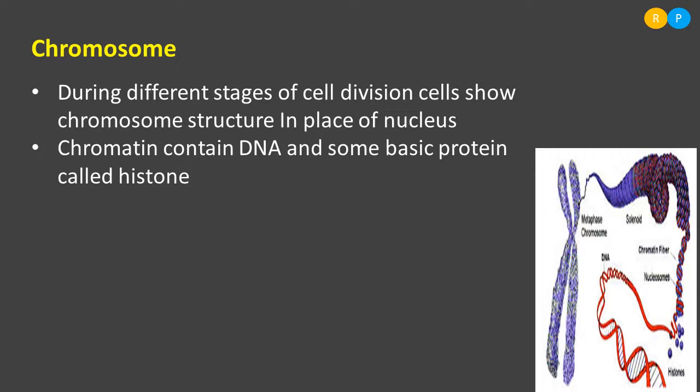Which structure is actually forming the chromosome? In the nucleoplasm, small circular structures are present named as nucleolus. Together with the nucleolus, we have also seen one more thread-like structure — that is chromatin. Chromatin is a thread-like structure that during cell division gets converted into a highly coiled structure called chromosome. Chromatin contains DNA and some basic proteins called histone.